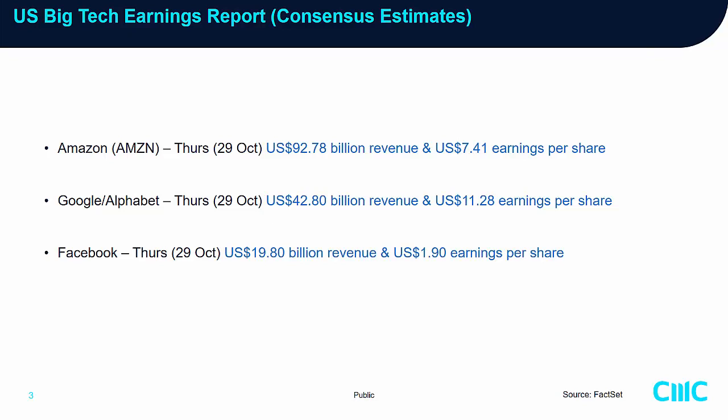Today will be the remaining big tech earnings report release. Let's take a look at the consensus estimates surveyed from FactSet. Amazon, Google, and Facebook will all be reporting their earnings after the close of today's US session. I'll flash these slides for a while for you to take a look at the consensus estimates on revenue as well as earnings per share.